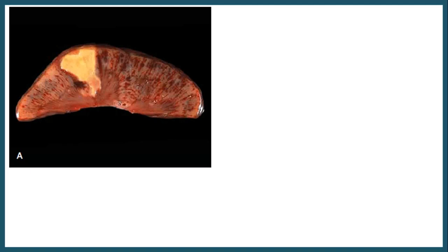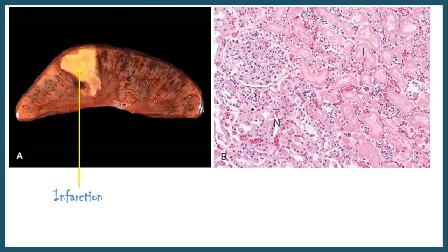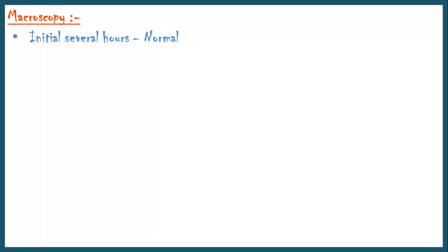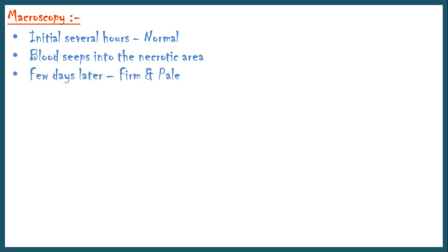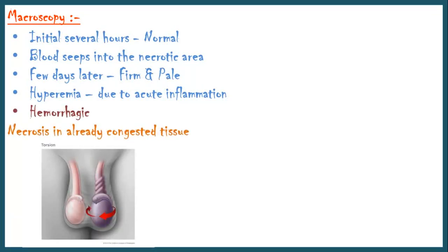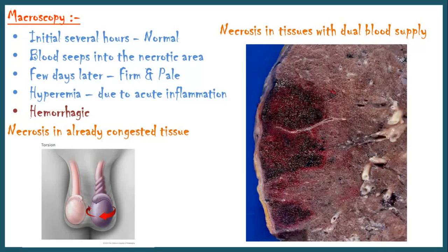This is an image of coagulative necrosis in renal infarction. The microscopic image shows normal cells on the left side and coagulative necrosis on the right side — the necrotic area looks deeply eosinophilic and you can see the preserved structural outlines of the cells. Macroscopically, during the initial several hours the necrotic area may appear normal. Then the area shows a mottled appearance due to seepage of blood from damaged blood vessels. Subsequently, blood gets cleared out, and a few days later the necrotic area looks firm and pale, lined by a rim of hyperemia due to acute inflammation. Sometimes the necrotic focus could look hemorrhagic, such as in torsion of testis or lung infarctions — this is called hemorrhagic necrosis, a special type of coagulative necrosis.